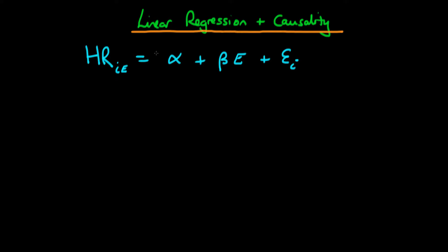Just to reiterate, we're talking about an individual's potential level of resting heart rate, which in most cases is not actually observed. We only observe the heart rate an individual actually obtains for exercising amount E_I. Also note that this relationship contains E, not E_I, because it represents the causal relationship between any given exercise level and any potential heart rate that individual would achieve.